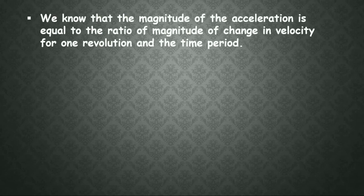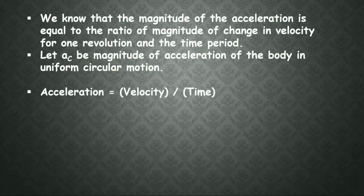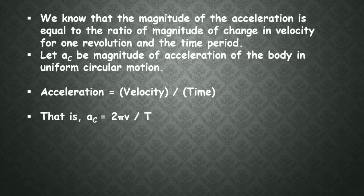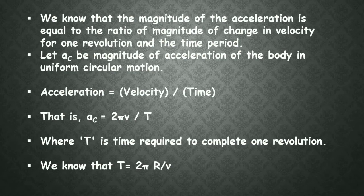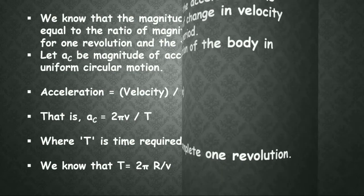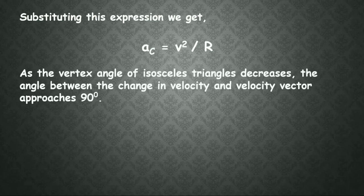We know that the magnitude of acceleration equals the ratio of the magnitude of change in velocity for one revolution to the time period. Let AC be the magnitude of acceleration of the body in uniform circular motion. Hence acceleration AC equals 2πv divided by T, where T is the time required to complete one revolution. We know that T equals 2πr divided by v. Substituting, we finally get acceleration in a circular path equals v² divided by r.